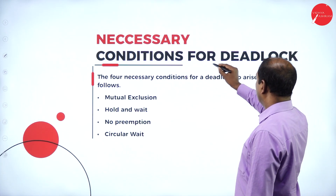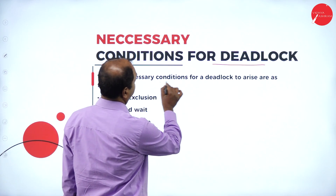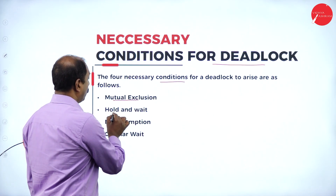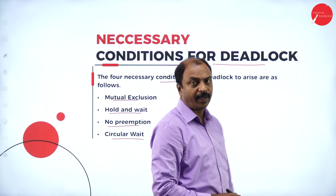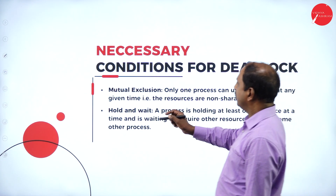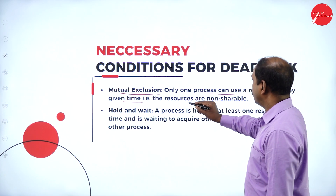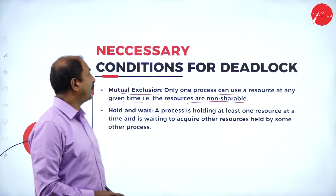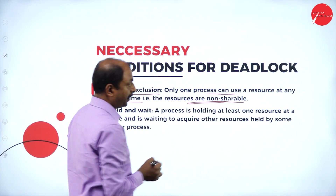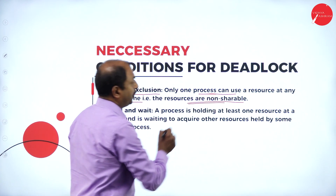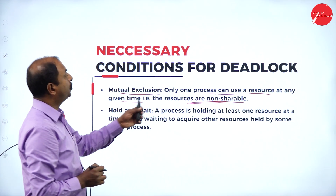Now, the necessary conditions for deadlock: there are four conditions to be satisfied for a system to be in a deadlock situation. They are: mutual exclusion, hold and wait, no preemption, and circular wait. The first condition, mutual exclusion, means only one process can use a resource at any given time — the resources are non-sharable. Only one process will utilize the resources effectively at a given time.